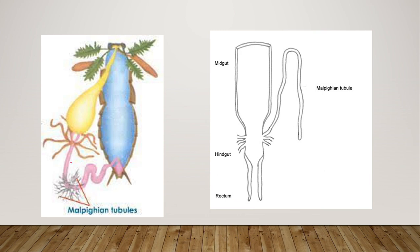These malpighian tubules are mainly blind-ended tubules. Blind-ended means they are open from one side and closed from the other side. So they are called blind-ended tubules. They are the main excretory organs and they are blind-ended. The number of malpighian tubules is approximately 150 in one cockroach.